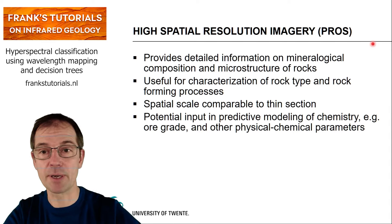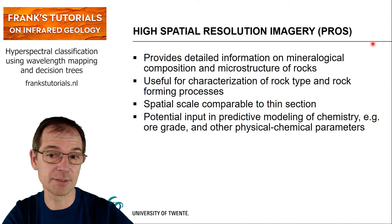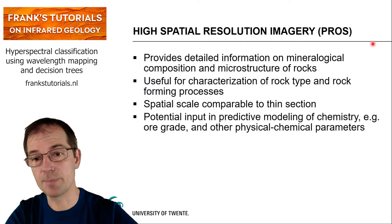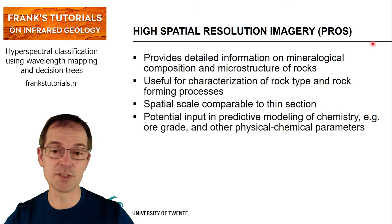This high spatial resolution hyperspectral imagery provides detailed information on mineralogical composition and microstructure of rocks. It's useful for the characterization of rock type and rock-forming processes, especially for hydrothermally altered rocks. The spatial scale is comparable to thin section, so you can easily compare the two — both provide complementary information. The results also give potential input into predictive modeling of chemistry and physical-chemical parameters.